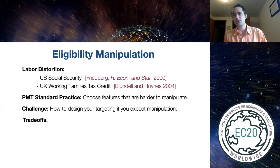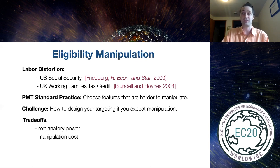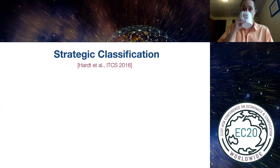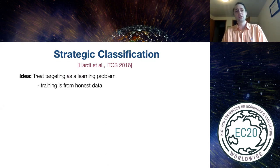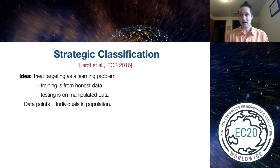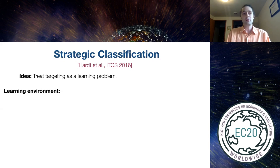In particular, you have to choose between a bunch of different features to select on, and each feature has some amount of explanatory power that will help you predict someone's income, and it will have some manipulation cost. You need to navigate those two aspects of each feature. The way I want to do that is by framing this through the lens of the literature on strategic classification, specifically starting with a paper of Hart et al. in 2016. The idea is that we're going to treat targeting as a learning problem, where the training data comes from honest data, but then when you go to test the policy that you learned, you're testing it on manipulated data. The data points are individuals in our population — potential recipients of our benefits.